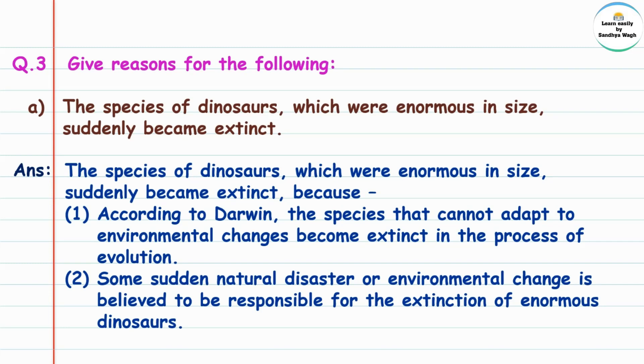Some sudden natural disaster or environmental change is believed to be responsible for the extinction of enormous dinosaurs. According to Darwin's theory, species that cannot adapt to environmental changes become extinct in the process of evolution. Natural disasters like floods and earthquakes may have caused the extinction of these species.